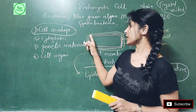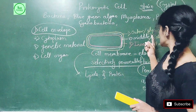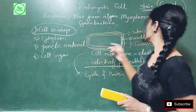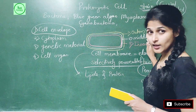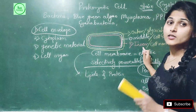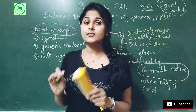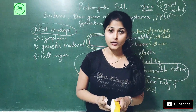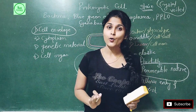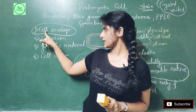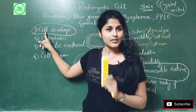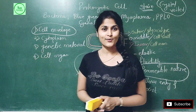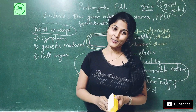So we have now completed the cell envelope. To summarize: the outer layer is glycocalyx, which has two forms — slime layer (thin) and capsule (thick). The middle layer is the cell wall, and the innermost layer is the cell membrane. All three together form the cell envelope, which protects the cell. In the next video lecture we will continue with the remaining parts of the prokaryotic cell. Bye-bye and thanks for watching.